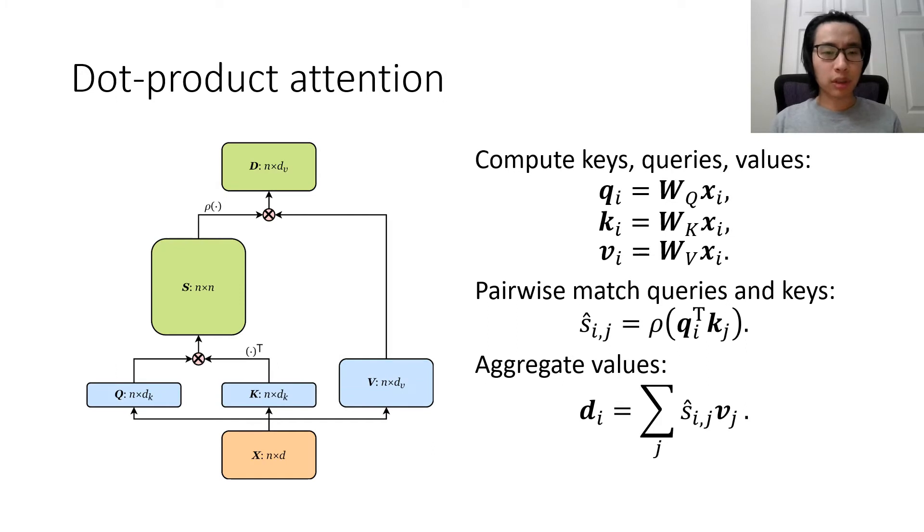A solution proposed to this problem is dot product attention, which computes a query, a key, and a value at each pixel, and then pairwise matches queries to keys to form the attention scores, and then uses the attention scores to aggregate the values. This mechanism effectively establishes long-range interactions in one shot because it densely connects every pair of pixels.